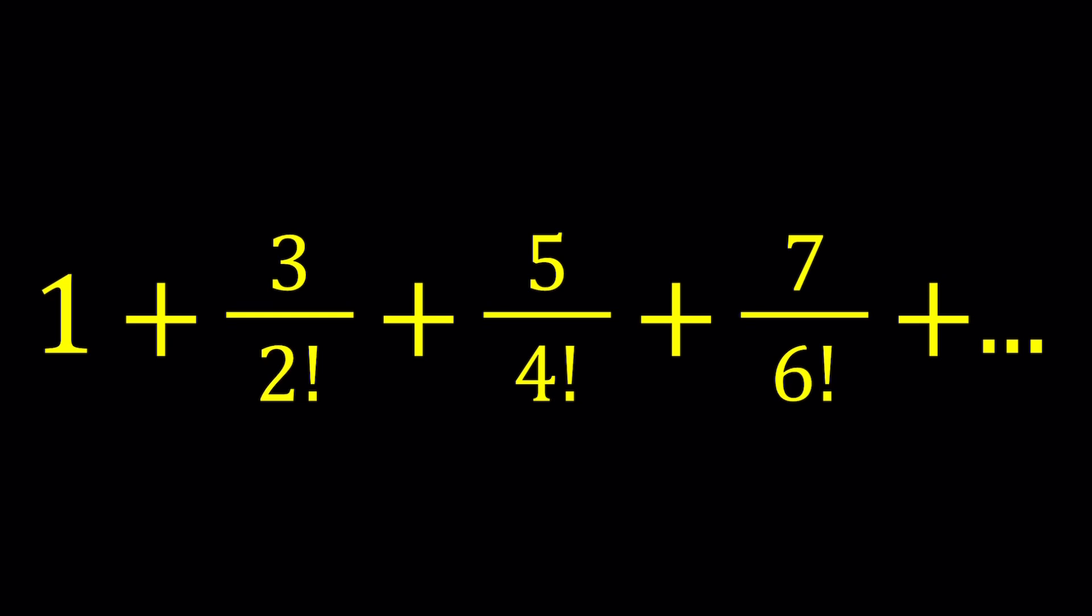We have 1 plus 3 over 2 factorial plus 5 over 4 factorial plus 7 over 6 factorial and so on and so forth all the way to infinity and beyond. So how do we evaluate these kinds of sums? We're going to be using an identity and a well-known infinite sum to evaluate this expression and I'll be presenting two methods.